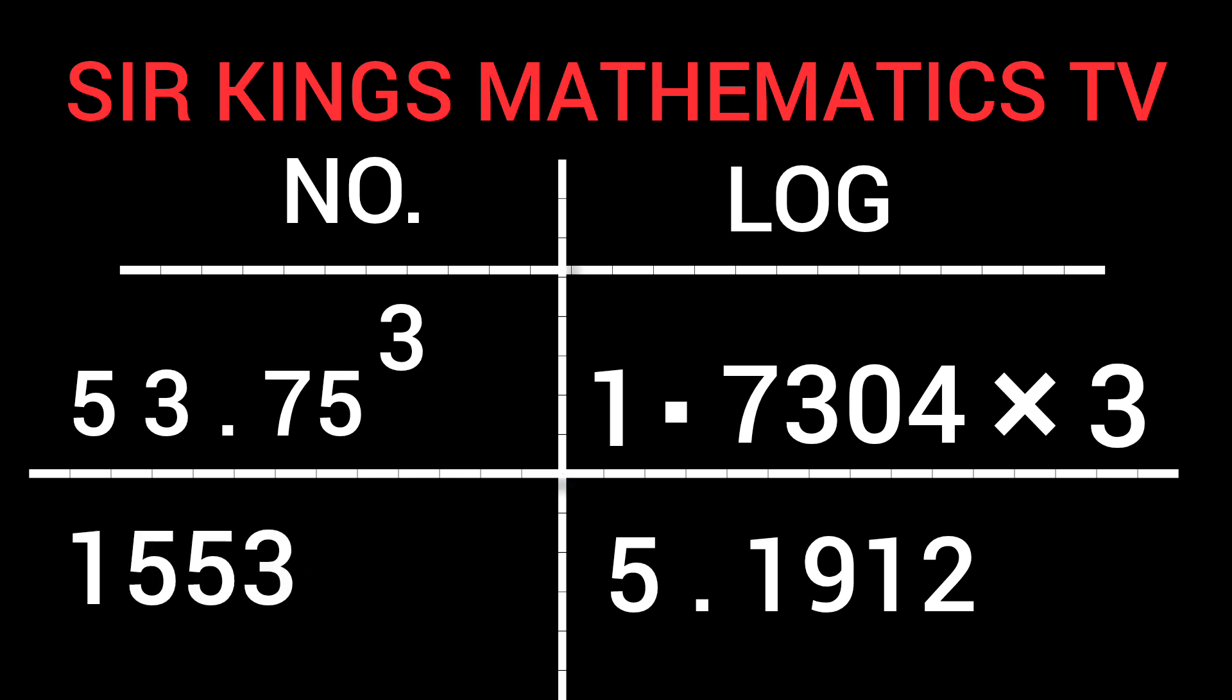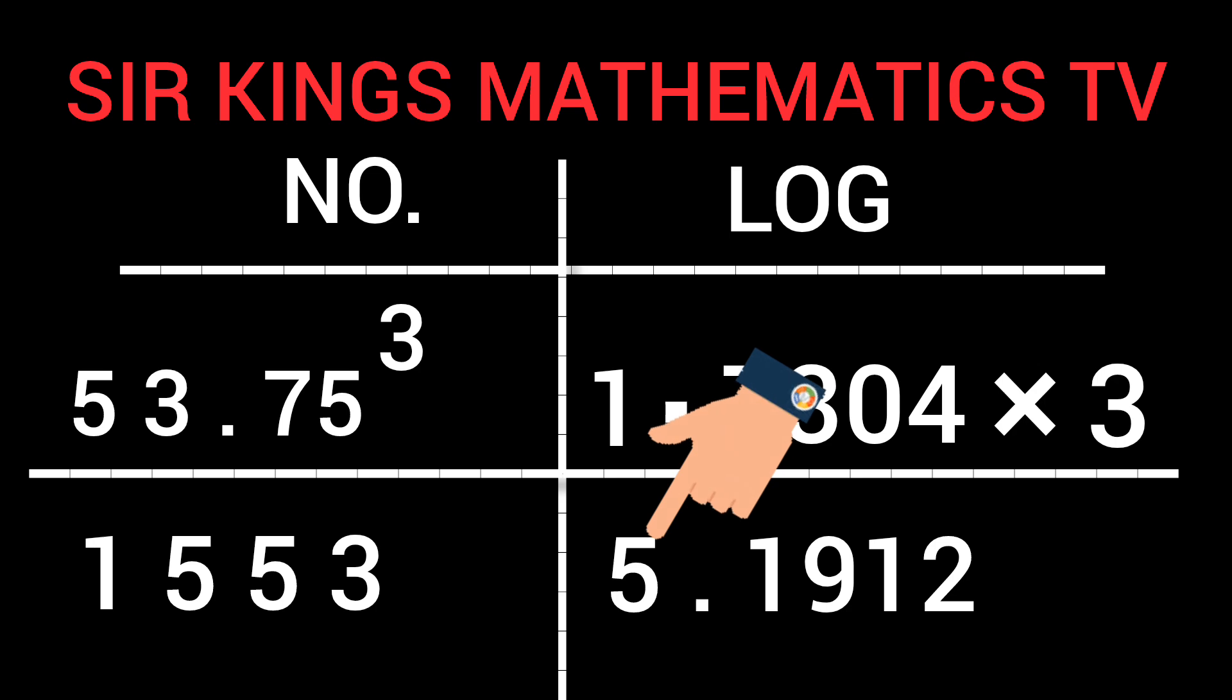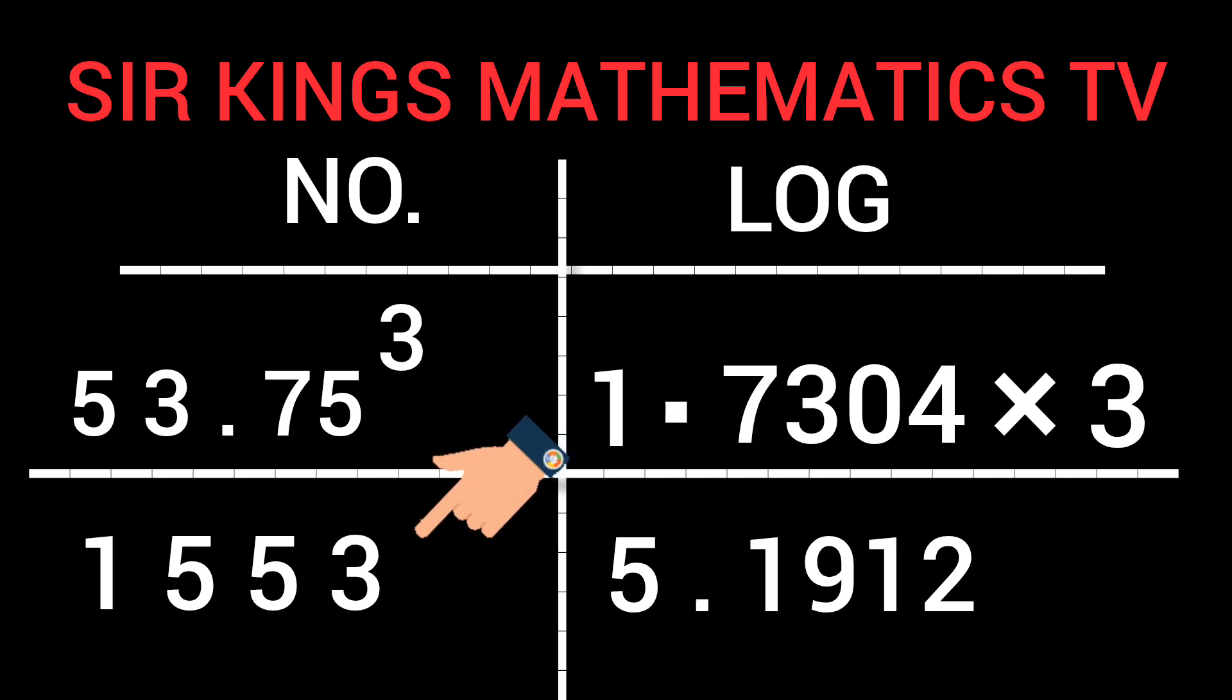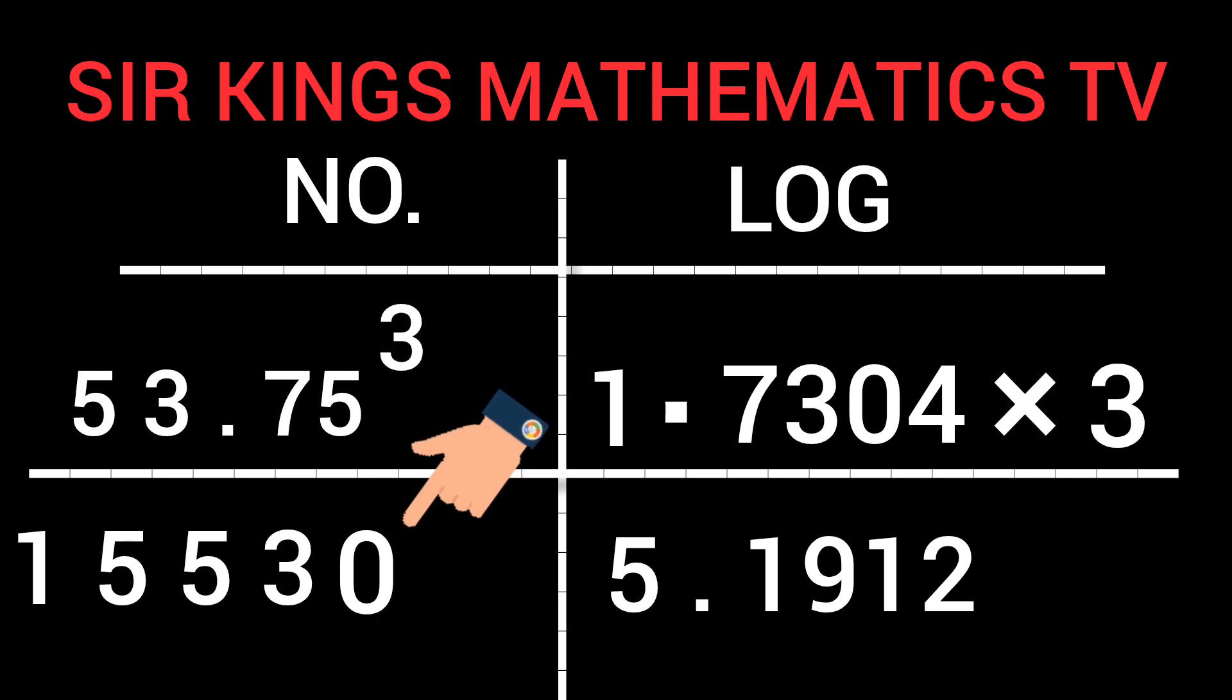Because of this 5 here, we are going to count 6 numbers before we put our point. Here, now let us count: 1, 2, 3, 4. You can see we don't have numbers to get to 6. Because of that, we are going to add 0 to reach 6.